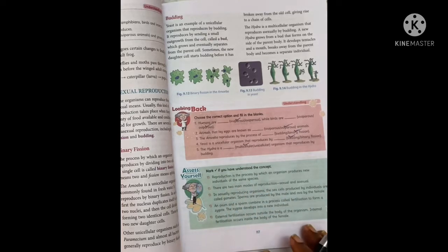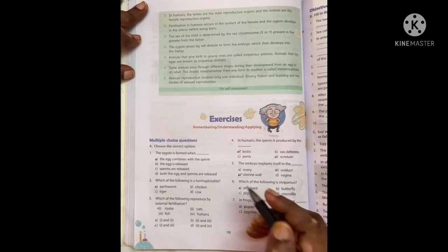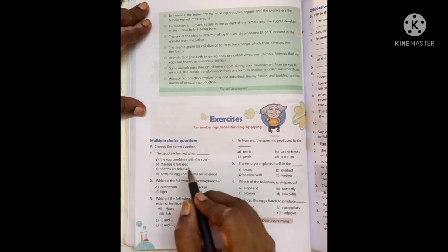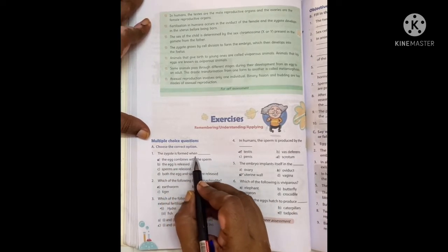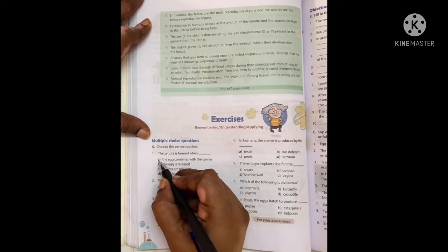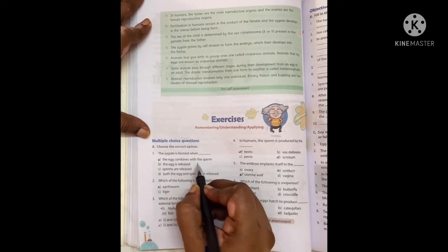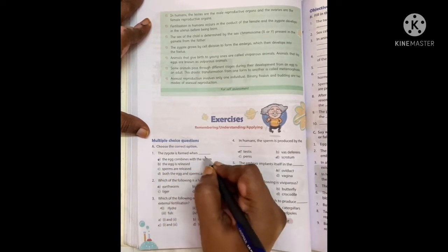We will move to the next page. MCQ. Choose the correct option. The zygote is formed when... Option A: The egg combines with the sperm. A is the answer.